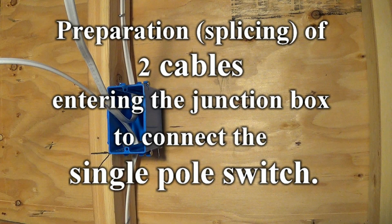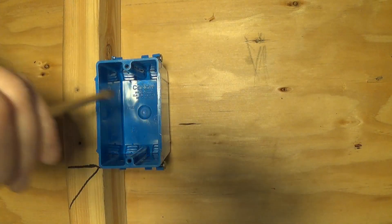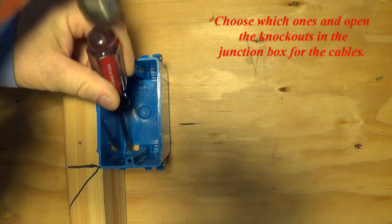Splicing of two cables entering the junction box to connect the single pole switch. Choose which knockouts to open in the junction box for the cables.